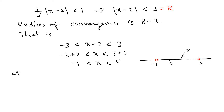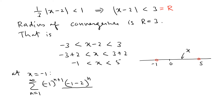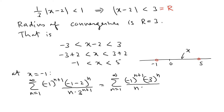We need to test the endpoints separately. At x equal negative 1, we plug into the original series: sigma from n equals 1 to infinity of negative 1 to the n plus 1 times x minus 2 to the n, divided by n times 3 to the n plus 1. Substituting x equals negative 1 gives x minus 2 equals negative 3, so we get negative 1 to the n plus 1 times negative 3 to the n, divided by n times 3 to the n plus 1.